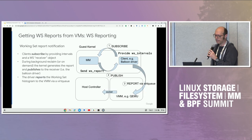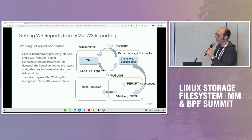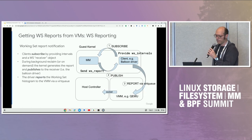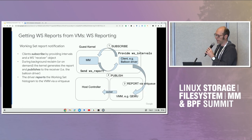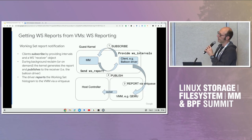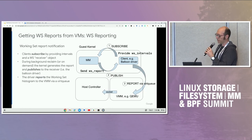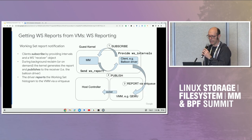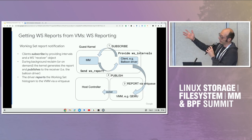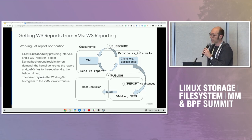This slide shows two different components to accomplish the goal of getting data from the guest to the host. The first component is a notification system of some kind, where we get notified from within the kernel that a working set report is available. You can think of this as analogous to a shrinker interface, where a component of the kernel — in our case, the balloon driver — is a client of this interface.